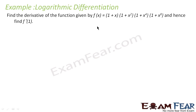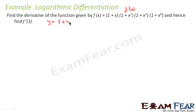Here we have to find the derivative of this function: (1+x)(1+x²)(1+x⁴)(1+x⁸), and then we have to find f'(1). First thing is to find f'(x). Here, if you see, a lot of multiplication is involved, so we can just apply log to both sides. So my equation is y = (1+x)(1+x²)(1+x⁴)(1+x⁸).